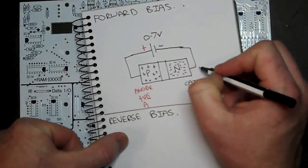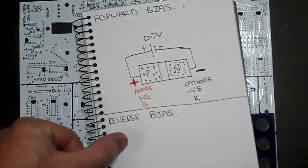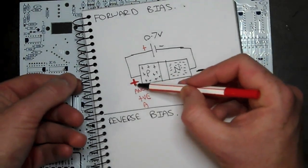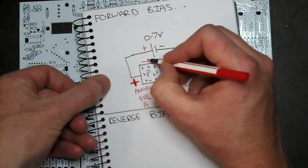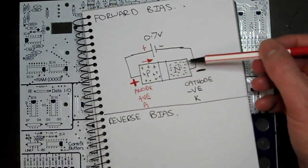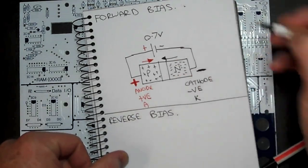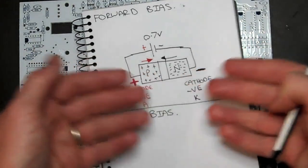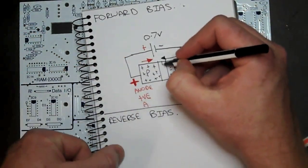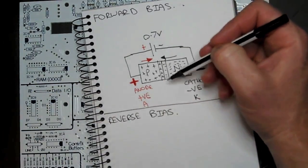With negative connected to the N-type side and positive connected to the P-type side: the positive ions in the P-type repel the positive potential, so they move toward the junction. The electrons in the N-type repel the negative terminal, so they also move toward the junction. The effect is that we collapse and close our depletion region — those two walls move in and completely close off, so we no longer have that high resistance region and current will start to flow.